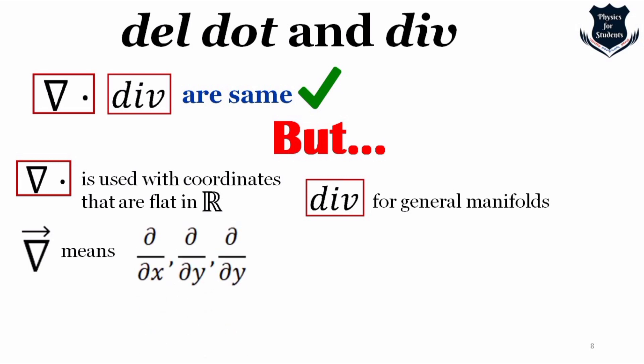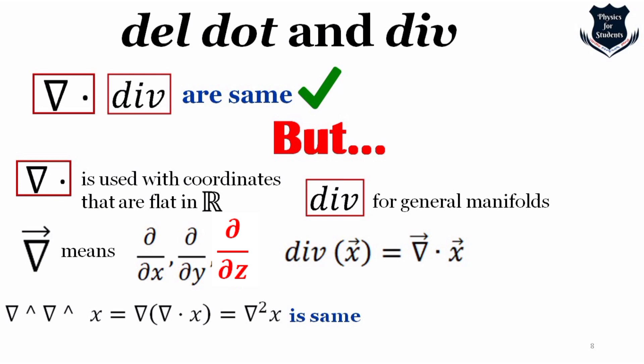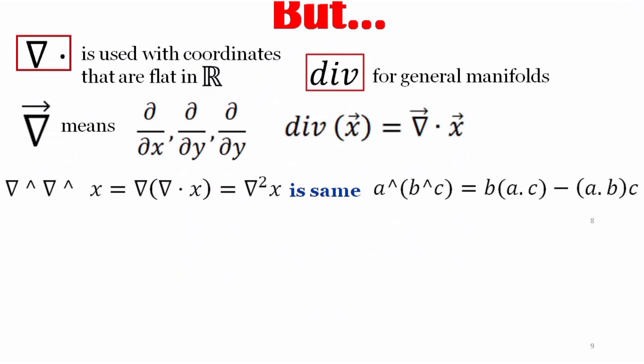The del vector operator means partial differentiation with respect to x, y, and z. When we see div of a field F, we calculate the partial differentials — this notation is the same formula as for the exterior product. In the next few minutes of the video, I am going to use the div operator just to show that I am working on flat coordinates in R. This is just a quick note, but useful if you want to go deep into understanding the difference between del dot and div.